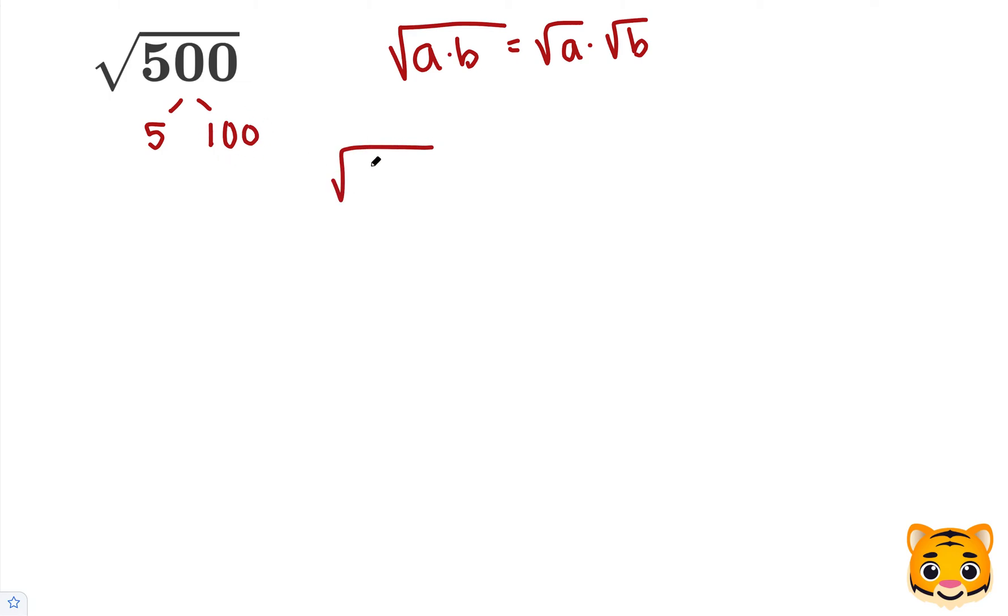Now let's rewrite the square root of 500. The square root of 500 is equal to the square root of 100 times 5, which we can now apply our math rule and rewrite this as the square root of 100 times the square root of 5.